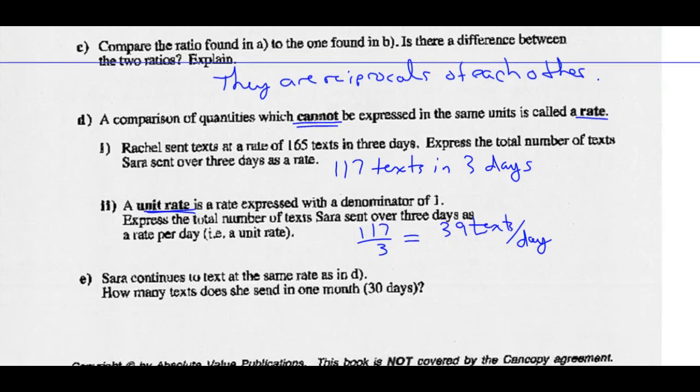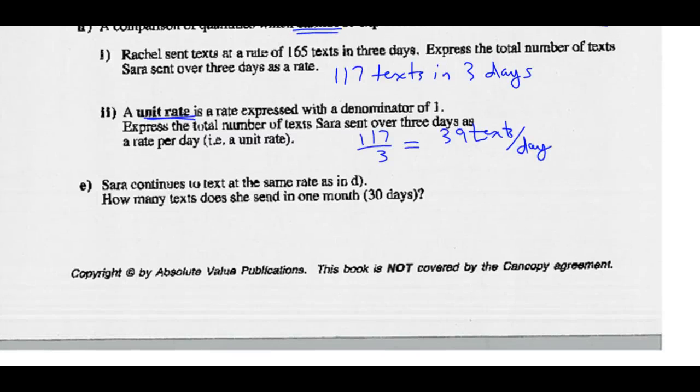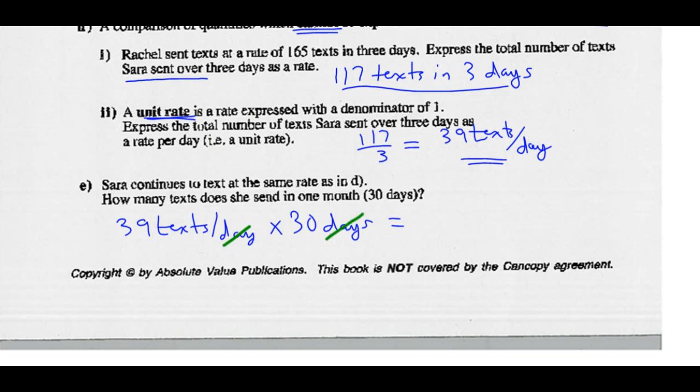Part E says Sarah continues to text at the same rate as she did in Part D. How many texts does she send in one month? So in Part A, we said Sarah was texting 117 in three days or 39 texts per day. How much does she do in one month? Well, 39 texts per day and she does that for 30 days. Our days would cancel out. That denominator divided by that numerator, we no longer have any days left. We have a total number of texts. That's our only unit. So 39 times 30 gives us 1170 texts in those 30 days or in that one month.